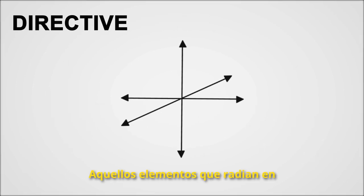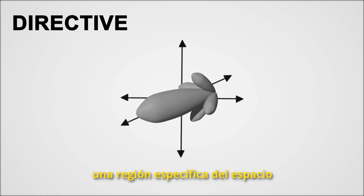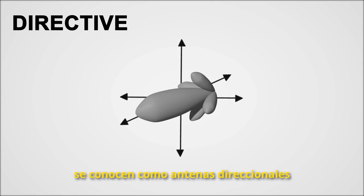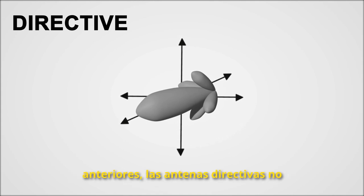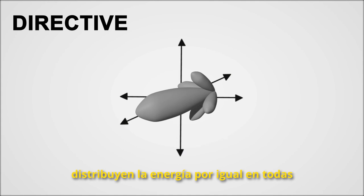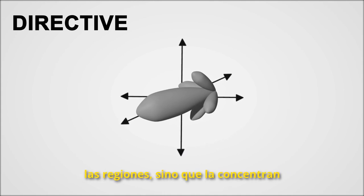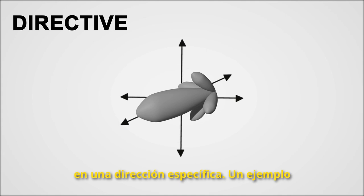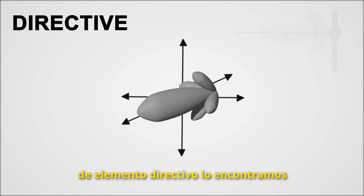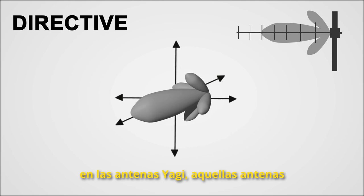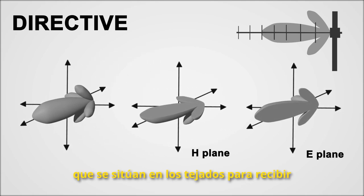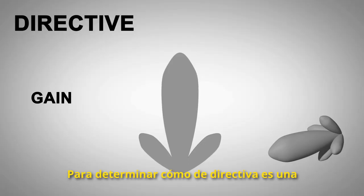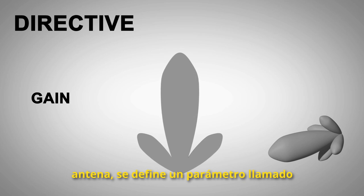Those elements that radiate in a single specific region of space are known as directional or directive antennas. Unlike the previous examples, directive antennas do not distribute all the energy equally in all directions, but concentrate it in a specific direction. An example of a directive radiating element can be found in Yagi antennas, the kind of antennas placed on rooftops to receive the television signal. To determine how directive an antenna is, a parameter called Gain is defined.